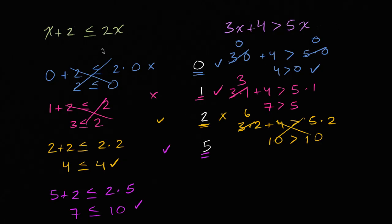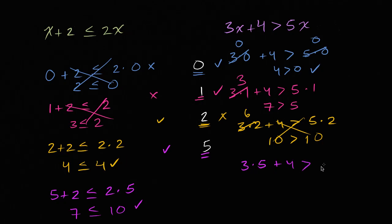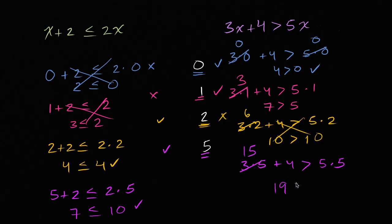What you're probably noticing now is that an inequality can have many numbers that satisfy it. In fact, sometimes they'll have nothing that satisfies it, and sometimes they might have an infinite number. For the left inequality, zero and one didn't work, but two and five did. For the right one, zero and one worked, two didn't. Let's see what five does: three times five plus four needs to be greater than five times five. Three times five is 15, plus four is 19, and 19 needs to be greater than 25 — it is not. So five does not satisfy this right-hand inequality.